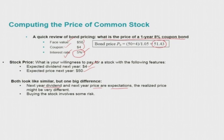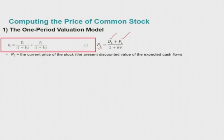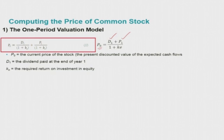In order to compute the price of a common stock, one widely used method is the one-period valuation model. It shows that the current stock price P₀ equals the dividend expected next year (D1) plus the expected price of the stock next year (P1), discounted by (1 + Ke). P₀ is the present discounted value of the expected cash flows. D1 is the dividend paid at the end of next year. Ke is the required return on investment in equity.